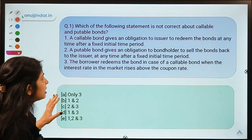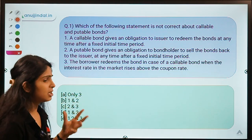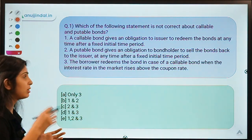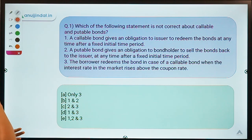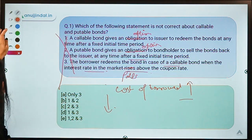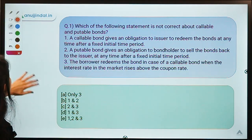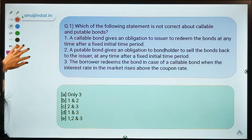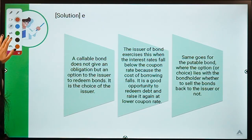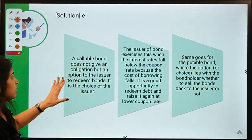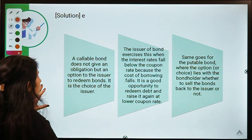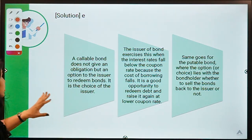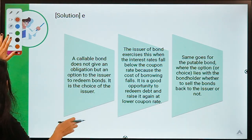Callable and putable bonds is a topic where many students face problems, so I hope this explanation helps. All the statements were incorrect — the key distinction is that both callable and putable features are options, not obligations, and the issuer calls bonds back when costs of borrowing fall, not rise.